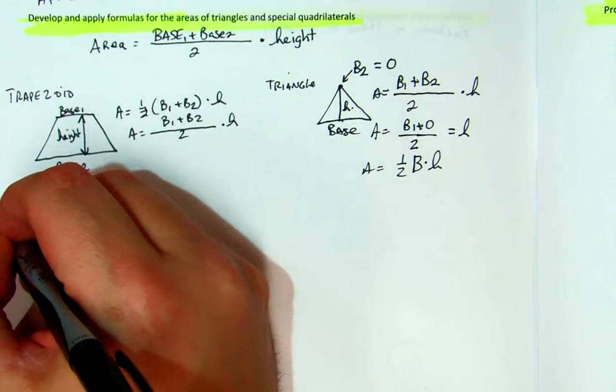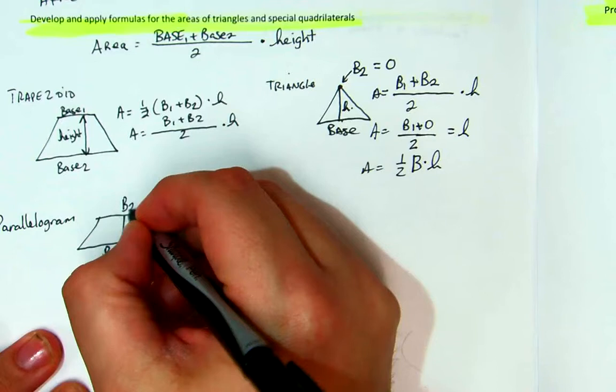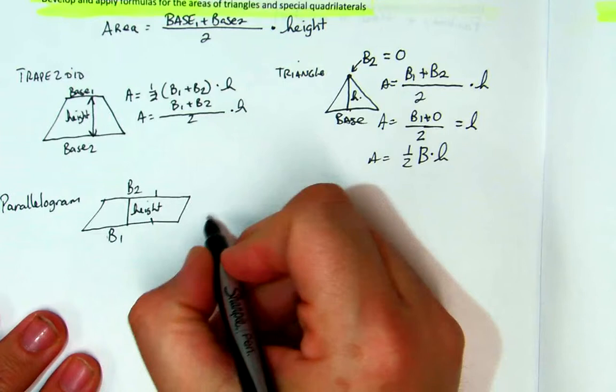Now, parallelogram. This is the height. So this is base 1, there's base 2. Now, what do we know about parallelograms? Opposite sides are equal to each other. So base 1 is equal to base 2.